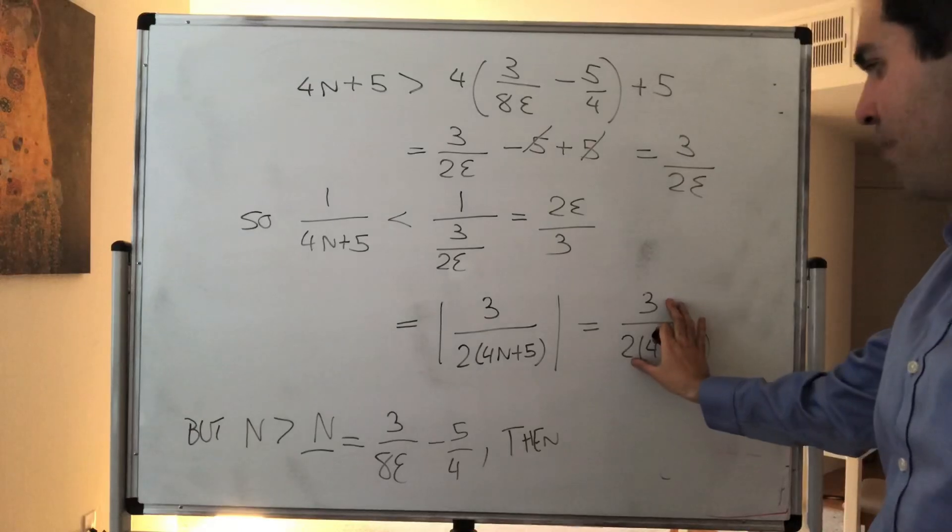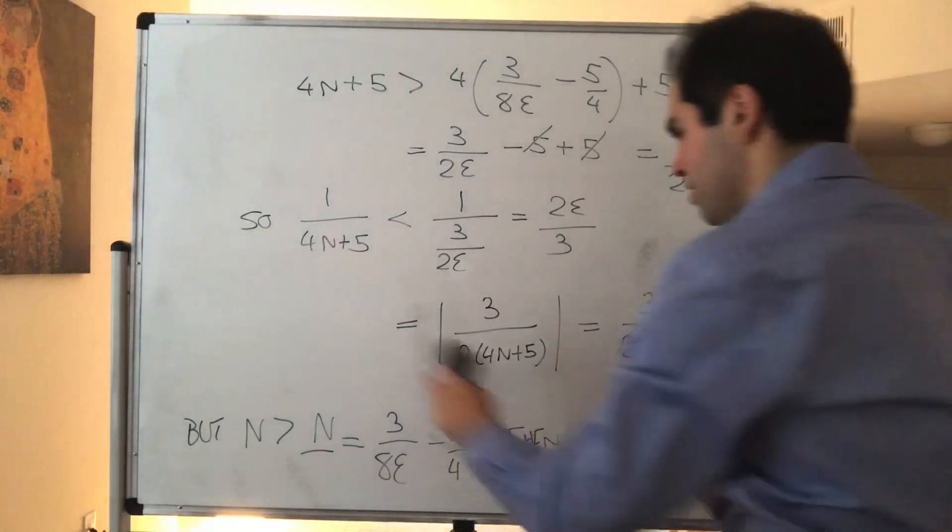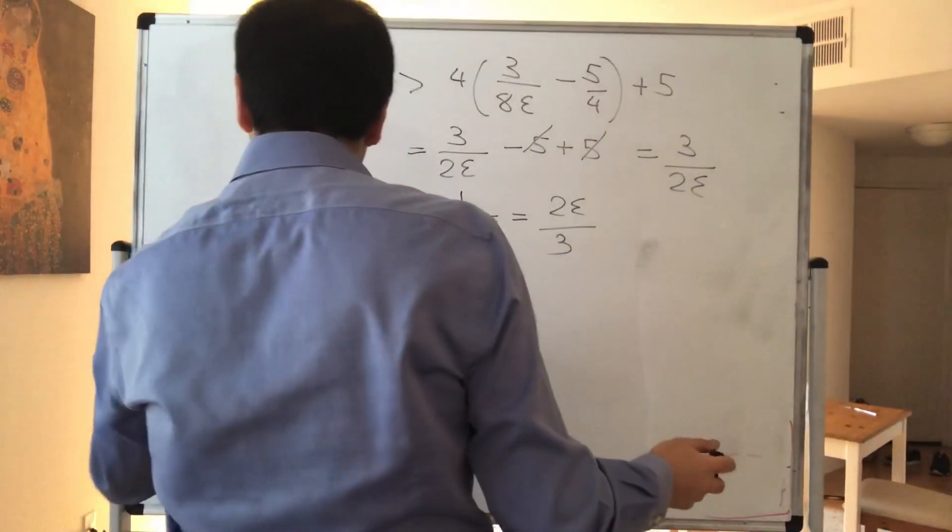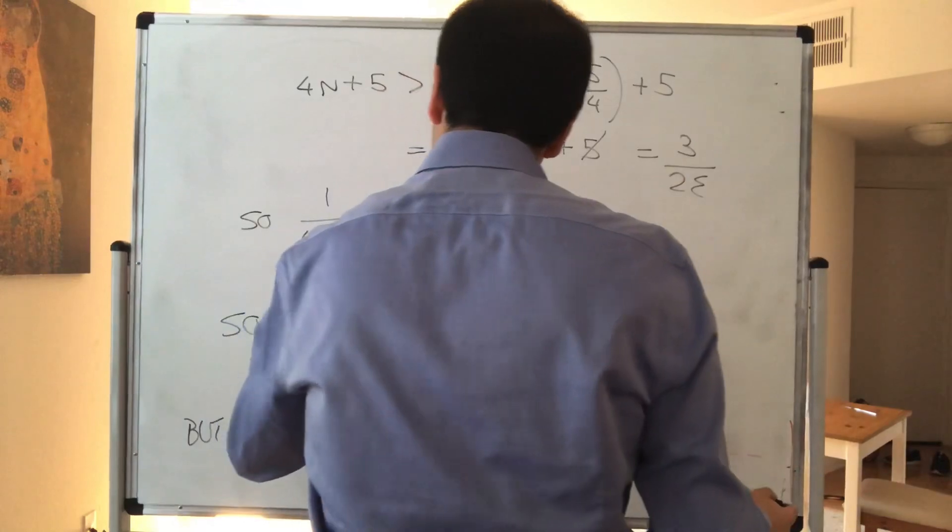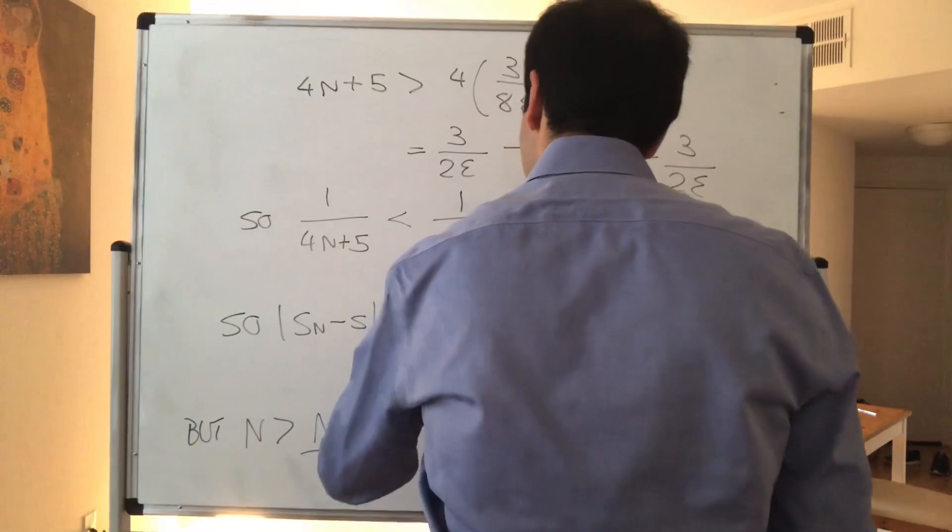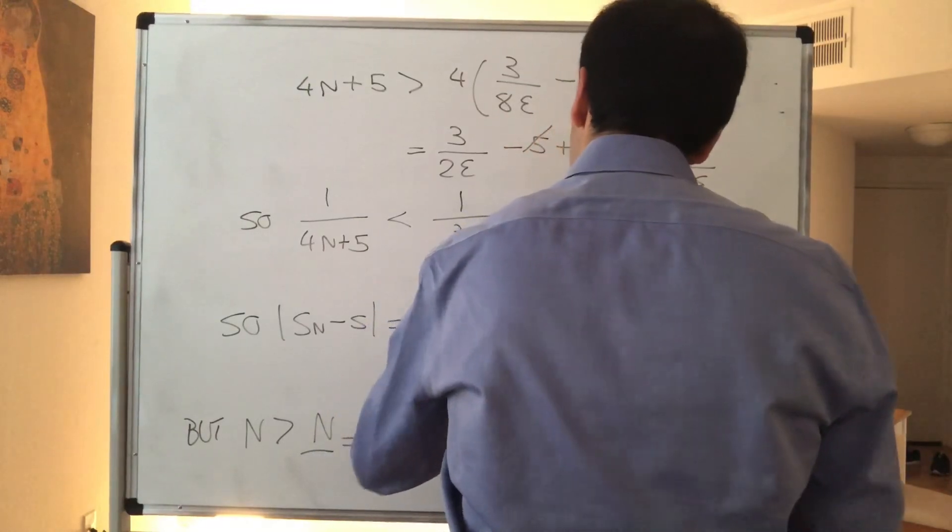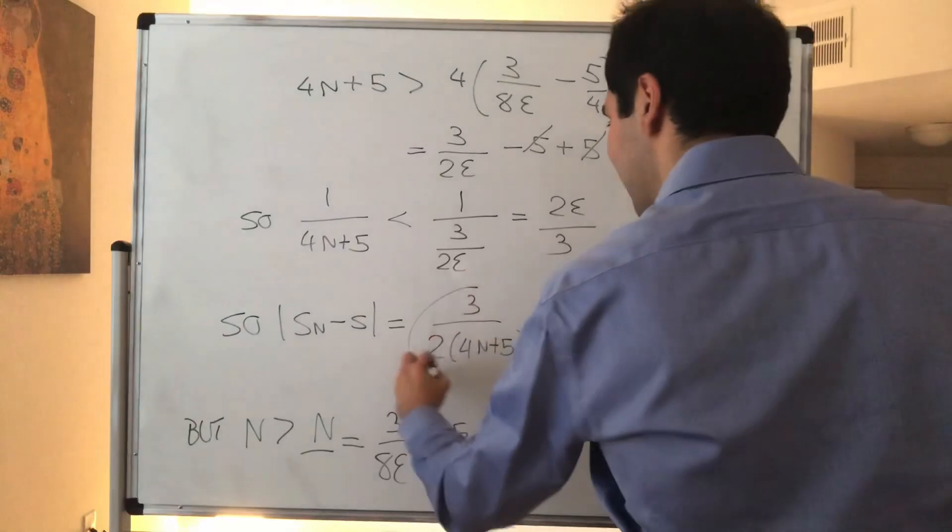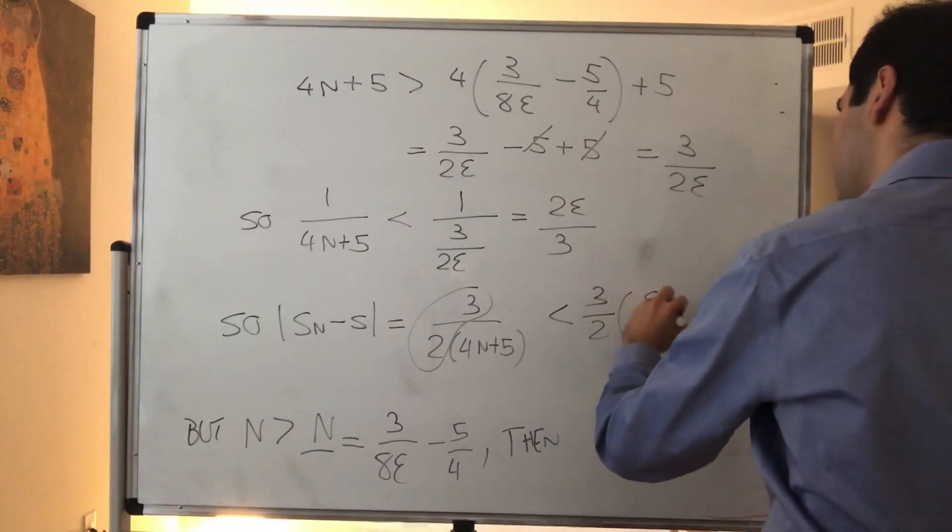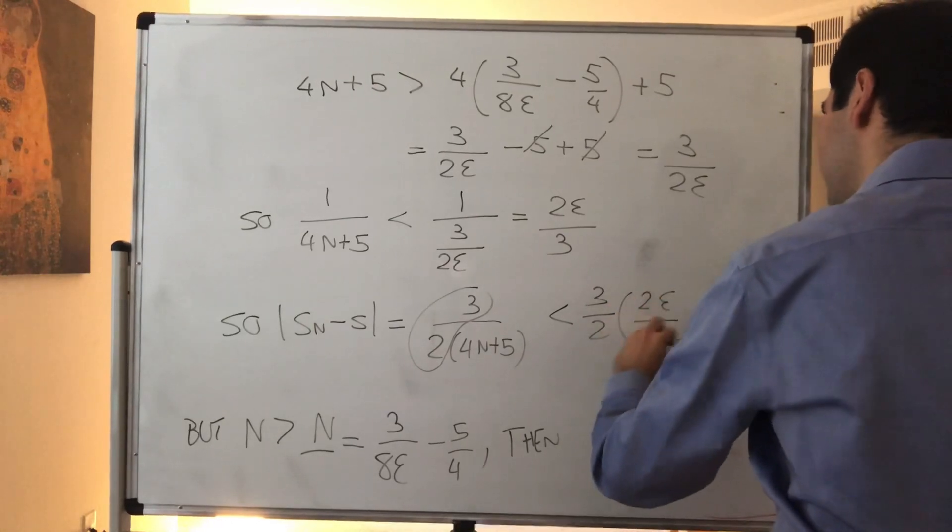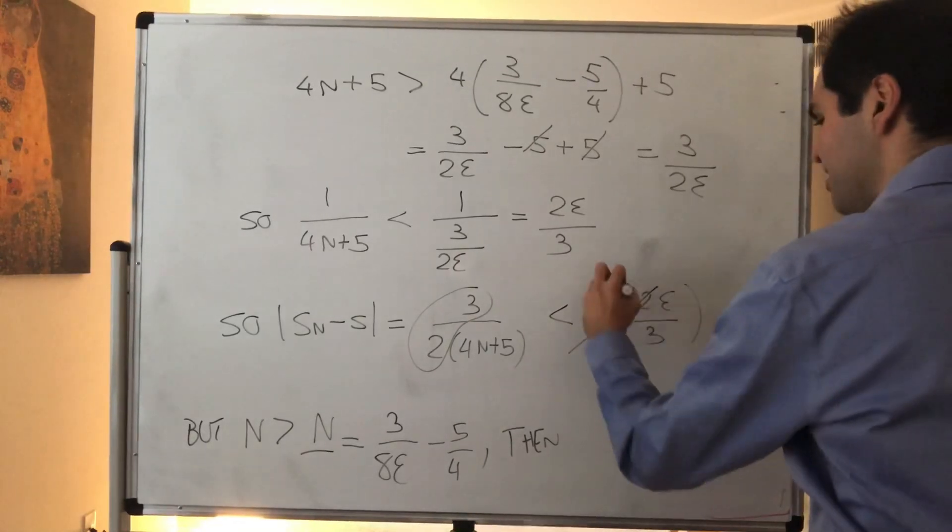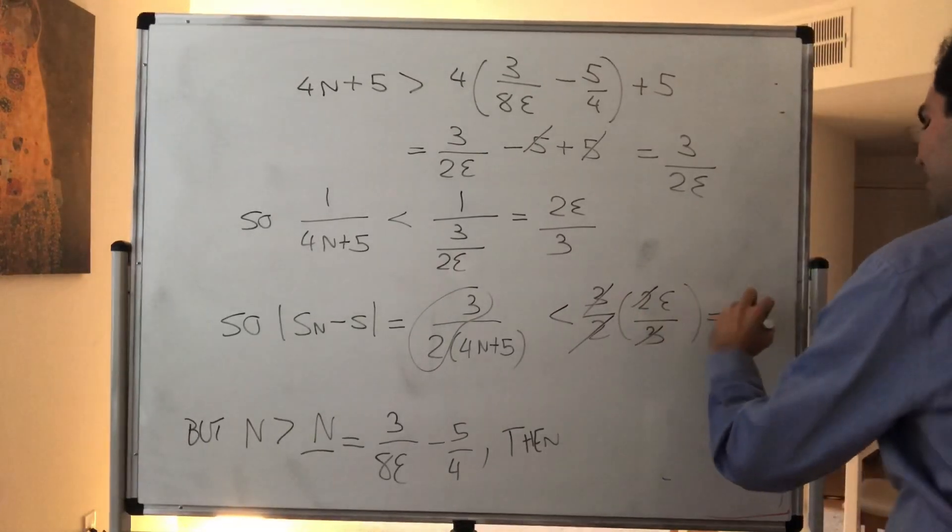And then if you multiply this by 3 halves, so in other words, if you want, S N minus S, which is 3 over 2 times 4N plus 5, then becomes less than, again, 3 halves times 2 epsilon over 3. Mix up my epsilons. And that becomes, it simplifies. And indeed, you get epsilon.